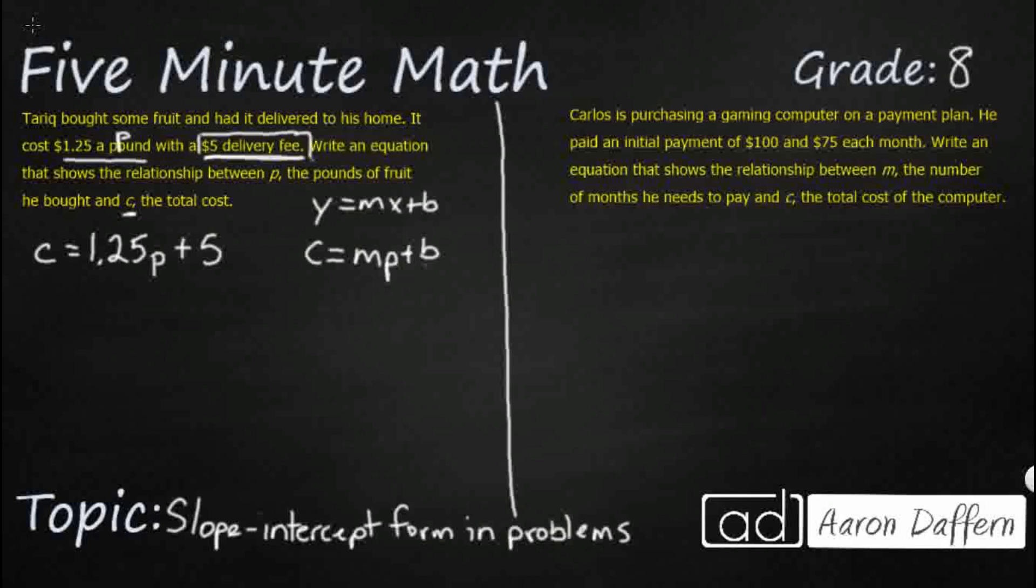If I buy 10 pounds, then my delivery fee is $5. If I buy zero pounds, my delivery fee is $5. If they showed up with no pounds, if I spent thousands of dollars and got 500 pounds, my delivery fee is still going to be $5.